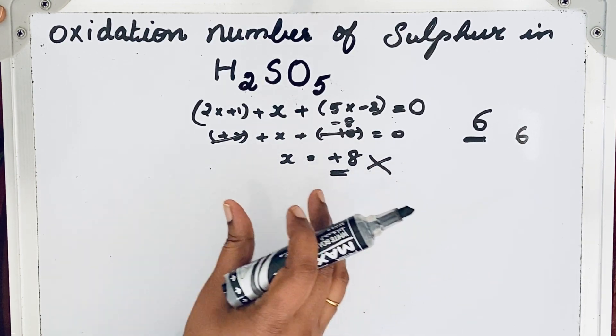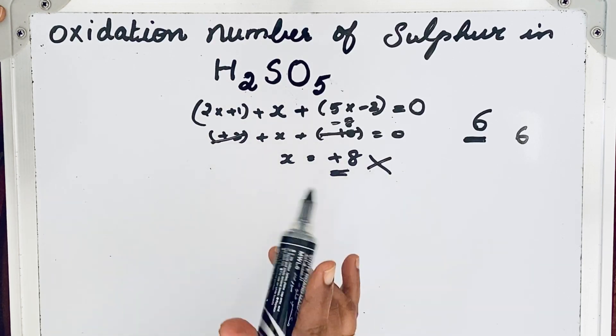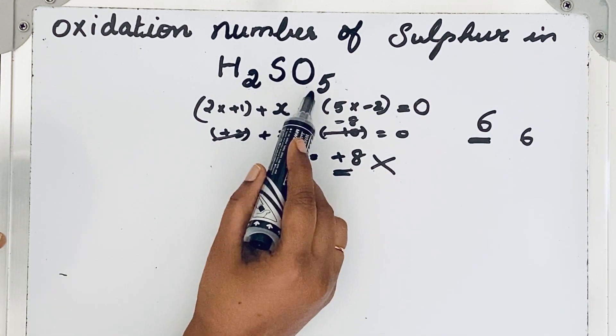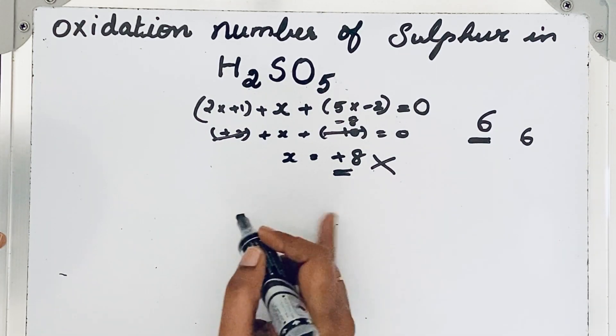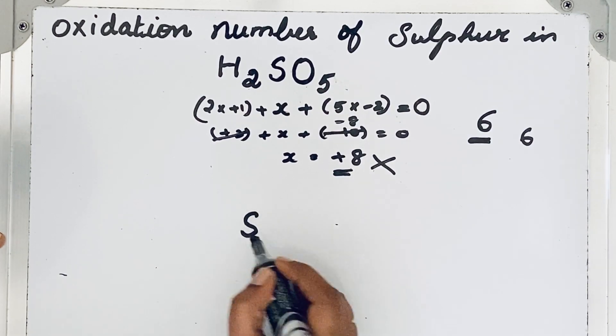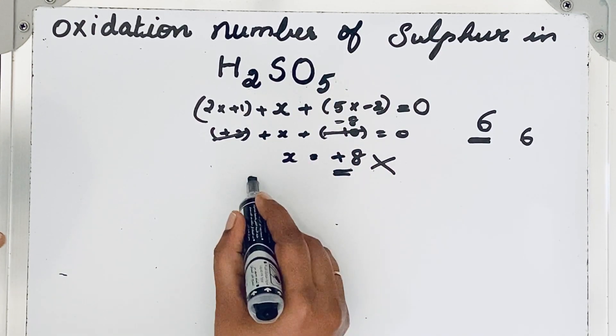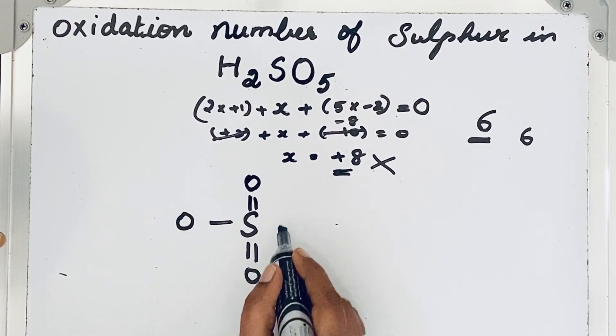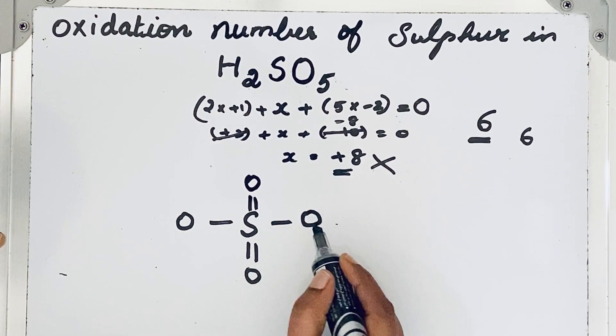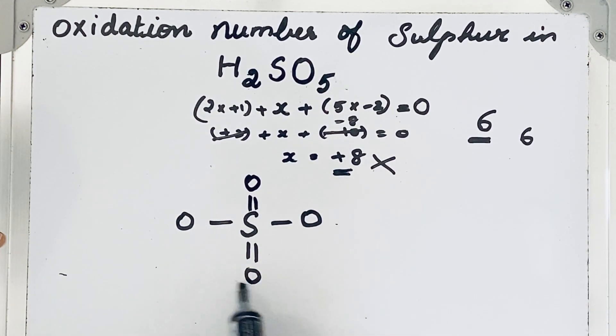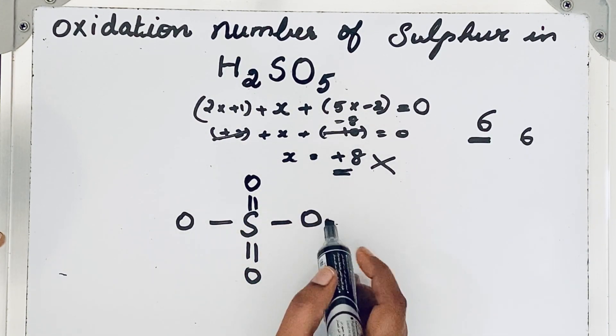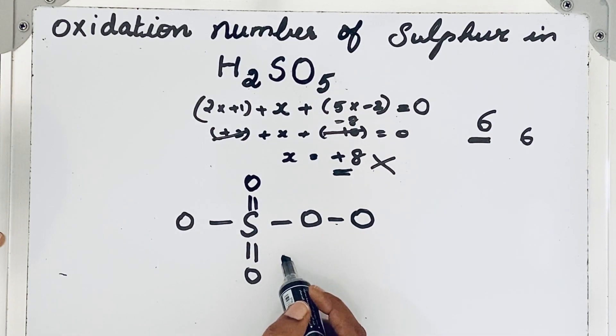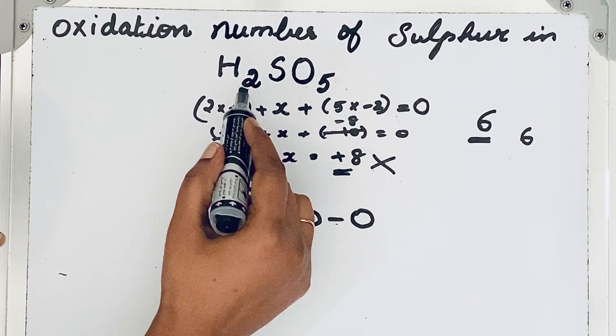To know this, we should know the structure of H2SO5. So look at the structure. Sulfur, you can see 5 oxygen atoms are attached, isn't it? So let us draw sulfur, and then 2 oxygen atoms with double bond, and then 1 oxygen atom with single bond, another oxygen atom also with single bond. So 4 oxygen atoms are over. We have one more oxygen atom. That oxygen atom is attached to this oxygen atom by single bond.